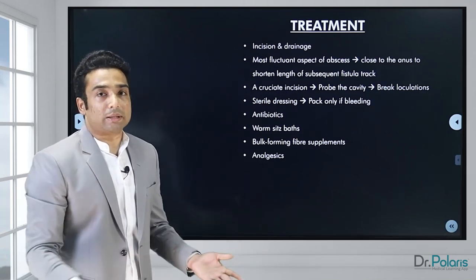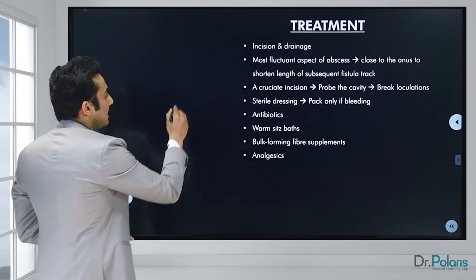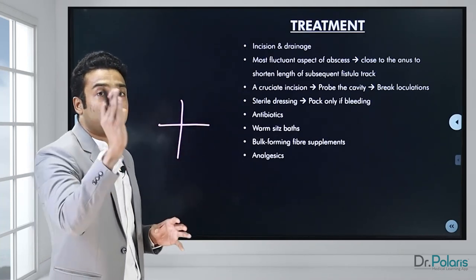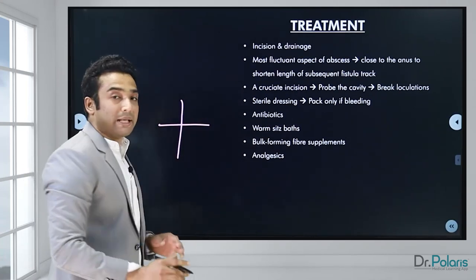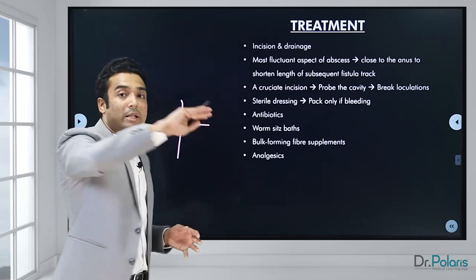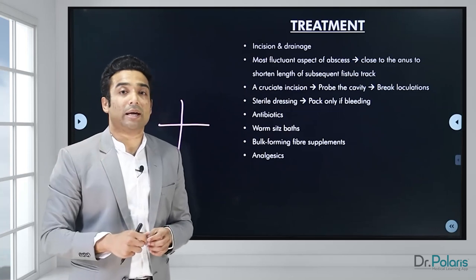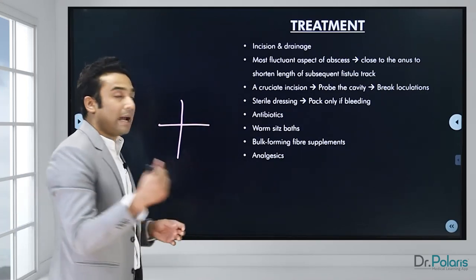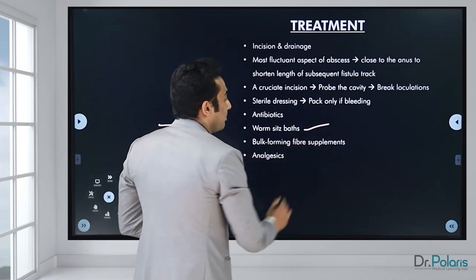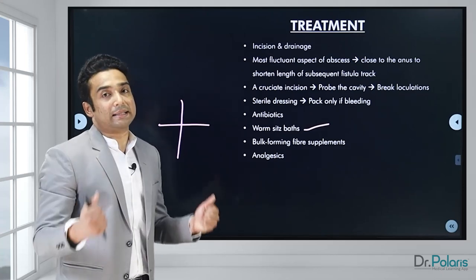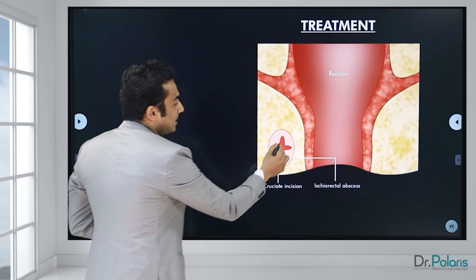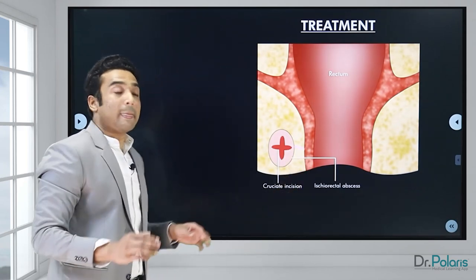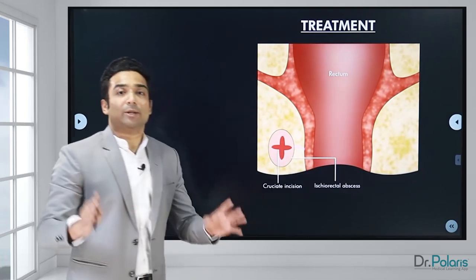The treatment is incision and drainage by placing a cruciate incision. In the most dependent or most fluctuant part of the abscess, after the patient is placed in lithotomy position, all the pus is drained and the loculi are broken. The entire cavity is cleared out, sterile dressing is placed, antibiotics are given, sitz bath is prescribed, bulk-forming supplements are prescribed to prevent constipation, and analgesics are given. The cruciate incision is placed as close to the anal canal as possible.